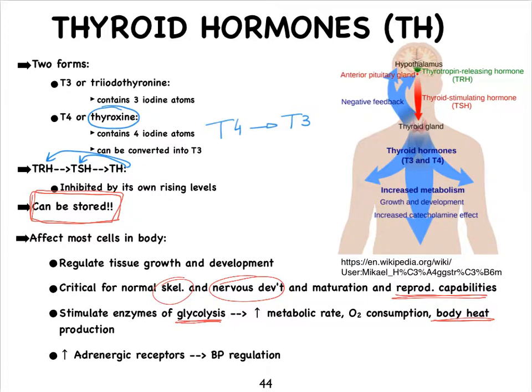Thyroid hormones are also going to increase adrenergic receptors — receptors that bind noradrenaline, also called norepinephrine. This means that thyroid hormone can indirectly control blood pressure regulation by affecting the number of adrenergic receptors.